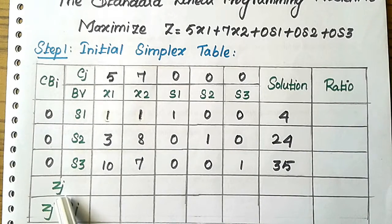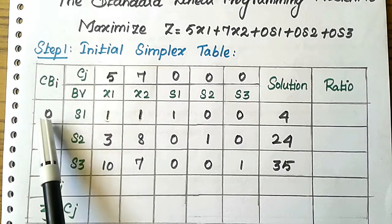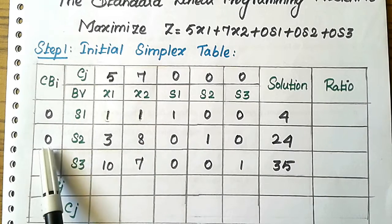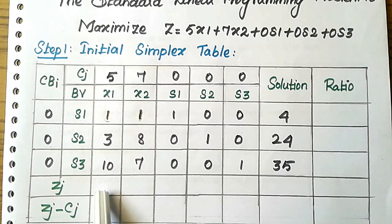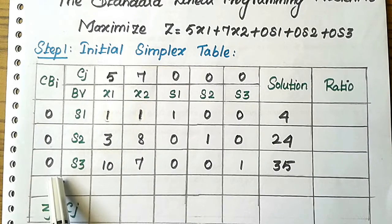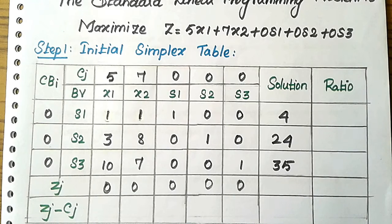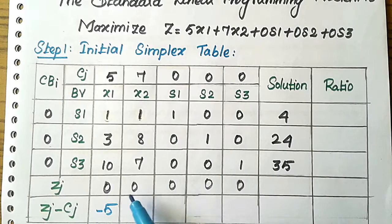Next, we find the Zj values. To find Zj, multiply the coefficient of each basic variable by the corresponding column elements and sum them. In the initial table, the Zj value is zero because the coefficients of s1, s2, s3 are all zero. Then we find the Zj − Cj values: 0 − 5 = −5, and 0 − 7 = −7, and 0 − 0 = 0 for the slack variable columns.